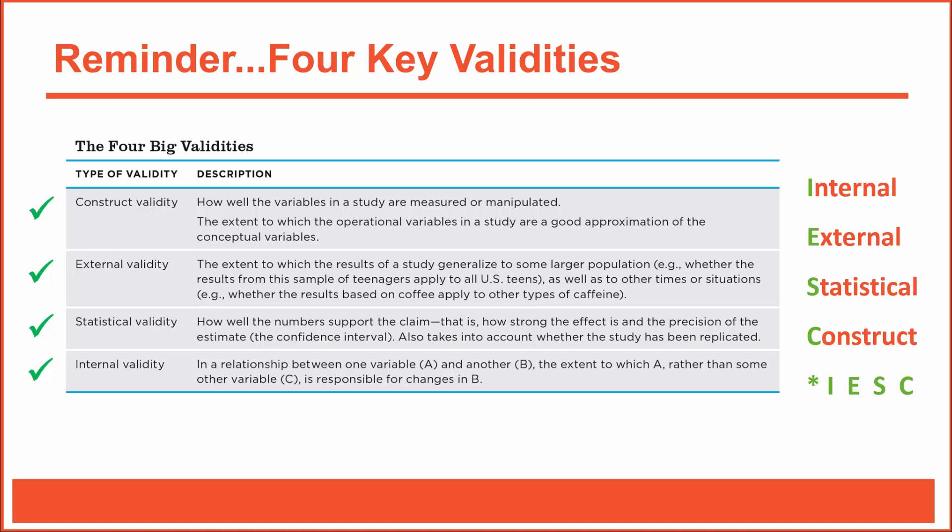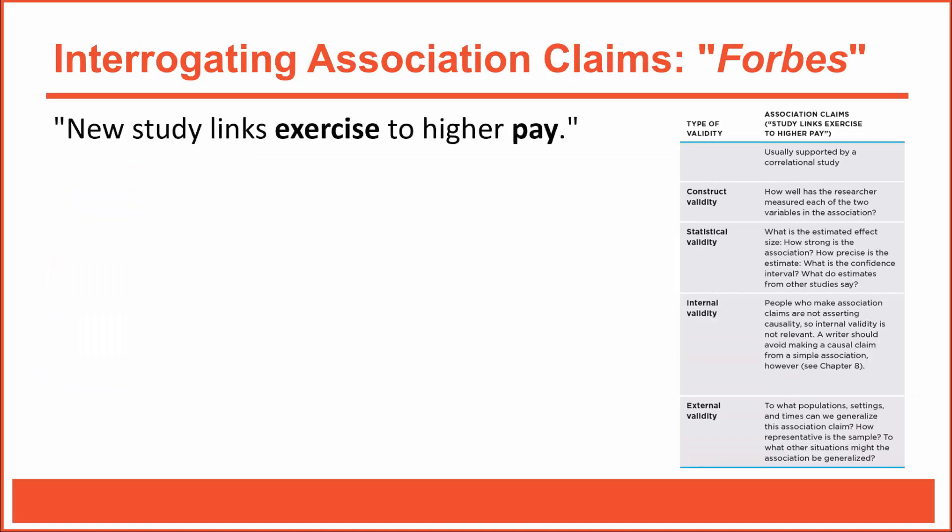Association claims are all about links between variables. When we discover that two variables are linked or associated, we gain quite a bit of additional information about each variable. Consider this association claim from Forbes.com: 'New study links exercise to higher pay.' The article describes a positive correlation between a person's exercise habits and their salary. When two variables are positively associated, we can predict that employees who exercise earn higher salaries — though predictions are more accurate when the correlation is strong and less accurate when it is weak.